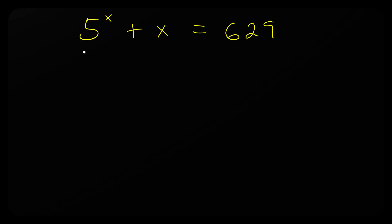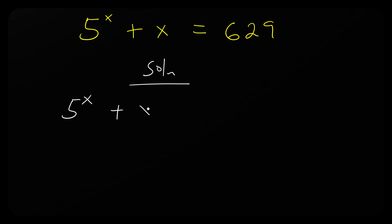All right, let's solve for x given 5 to the power x plus x equals 629. So we have 5 to the power x plus x equals 629.